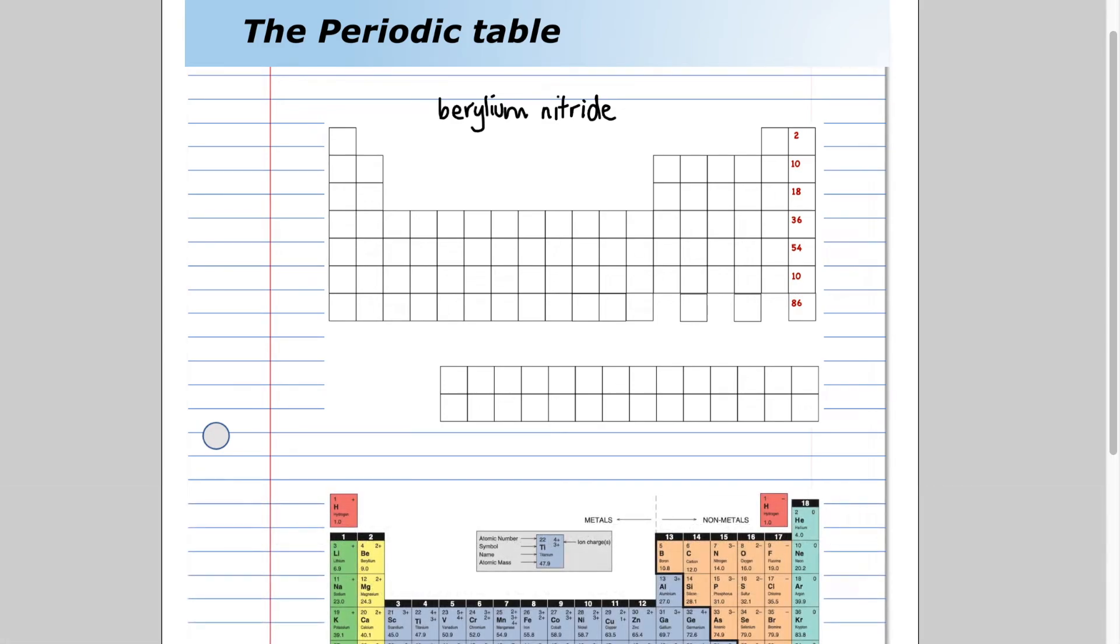First off, locate beryllium. There it is. Beryllium has four protons and four electrons. Beryllium has a two plus charge. Nitride comes from nitrogen. And where's nitrogen? Nitrogen right there with seven electrons. Nitrogen has seven protons and seven electrons because it's neutral. Nitrogen becomes a three minus.